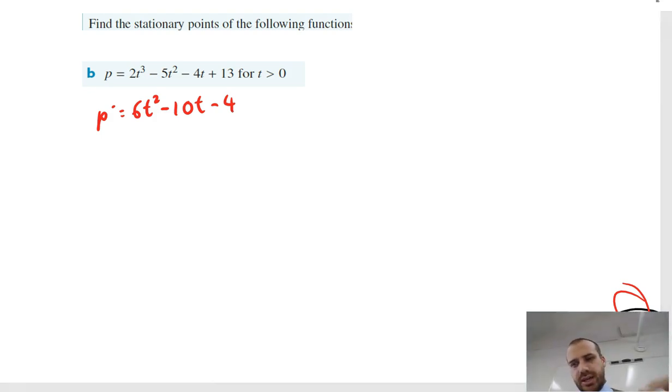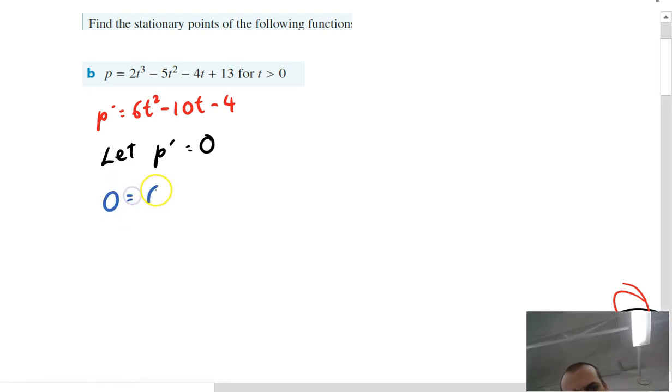The derivative function tells me how steep the graph is at any point. So if I let p dash, the derivative function, equal zero, I'll know when the turning point or the stationary point is occurring. So let's solve that now. Zero equals 6t² - 10t - 4.